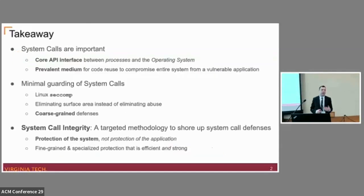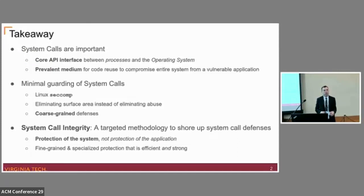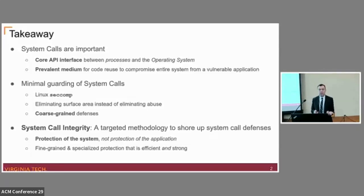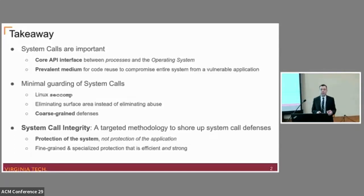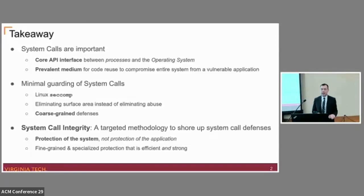The takeaway I want you to leave with today is that system calls are important and should be treated as such. System calls are important because they are the core API interface between processes and the operating system to get important functions done like file I/O, communicating with hardware, and networking. However, system calls can be a prevalent medium for code reuse attacks to compromise and take over an entire system.